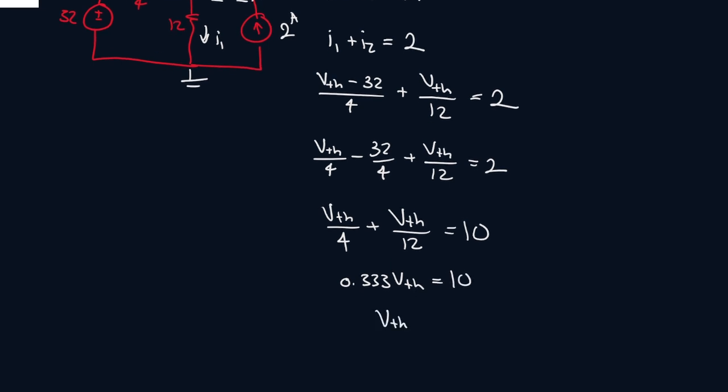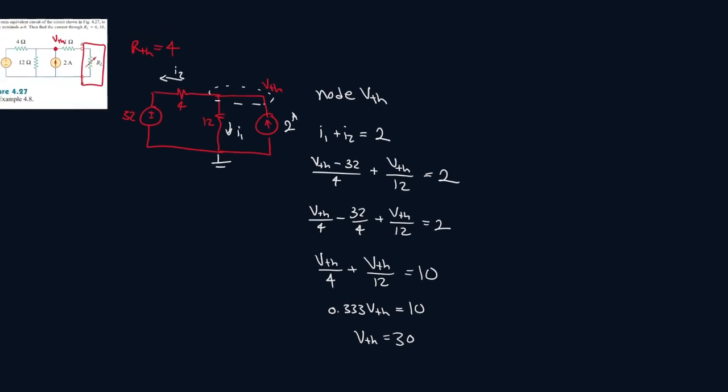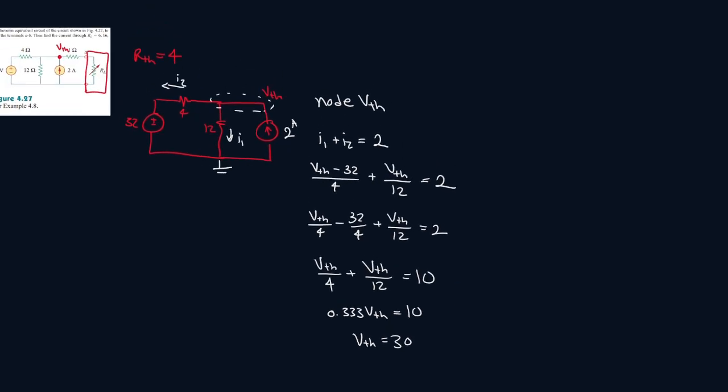That's 0.333 VTH equals 10. So 10 divided by that answer. VTH is 30. So let me erase this.